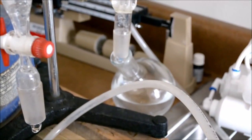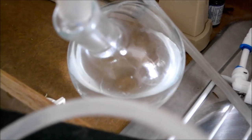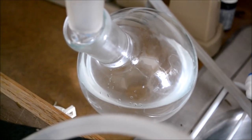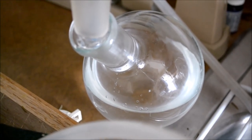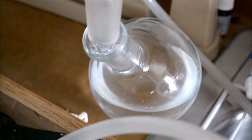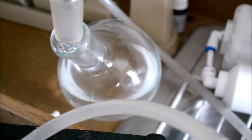Underneath that is the collection flask. That simply collects the essential oil that's dripping in there and the hydrosol as well, which they need to be separated, and hopefully we'll get a chance to show you that.